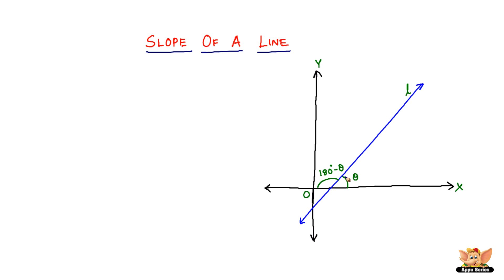The angle theta made by line L with the positive direction of the X-axis, measured anticlockwise — this small arrow here tells it all — is called the inclination of line L. So theta is greater than or equal to zero degrees and less than or equal to 180 degrees. It can't be less than zero and it can't be more than 180 degrees.